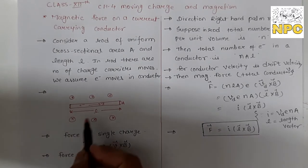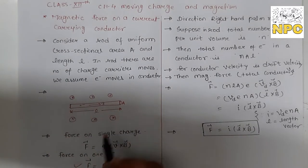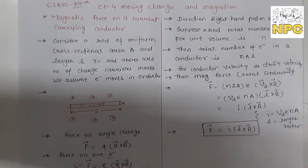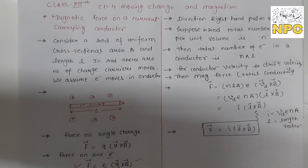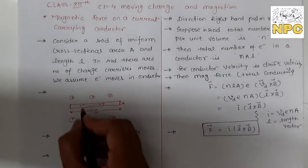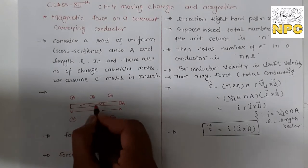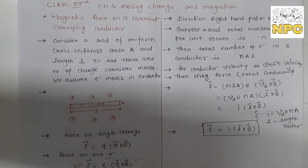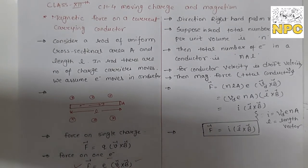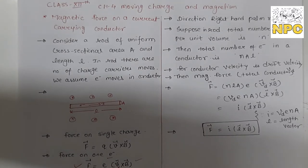We suppose this is only one electron. What is the magnitude? You need to find the direction of force. What is the force on one electron? You can find the magnitude and direction of the force — the direction can be found from the right palm rule.